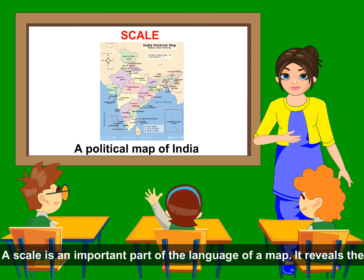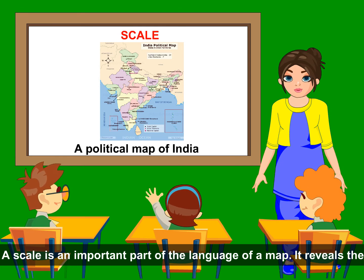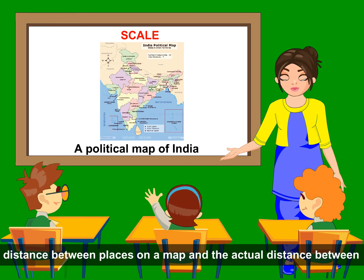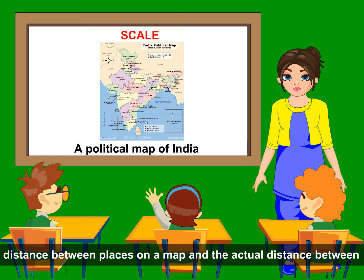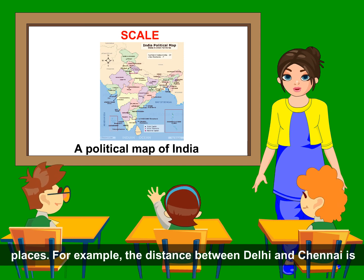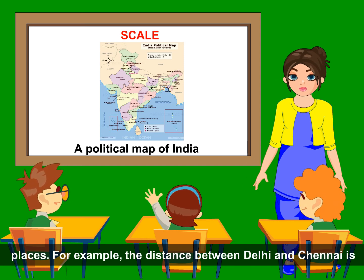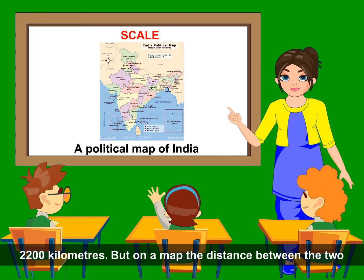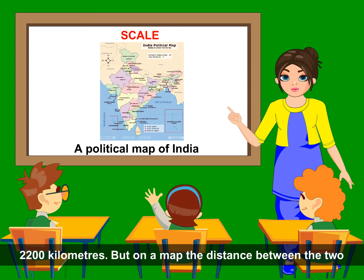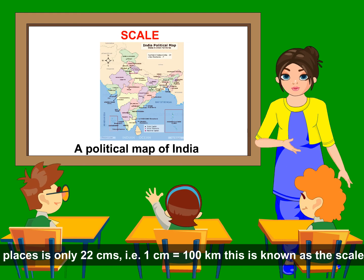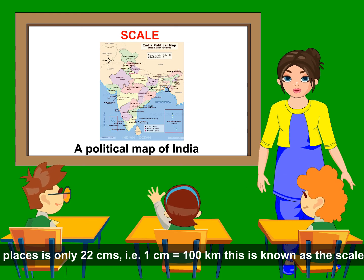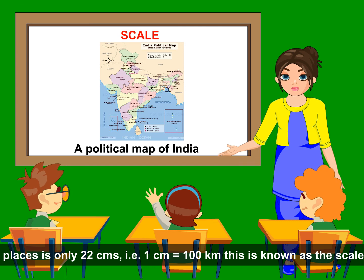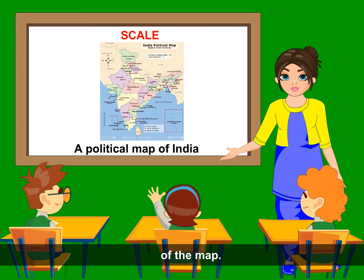A scale is an important part of the language of a map. It reveals the distance between places on a map and the actual distance between places. For example, the distance between Delhi and Chennai is 2200 km, but on a map the distance between the two places is only 22 cm. That is, 1 cm equals 100 km. This is known as the scale of the map.